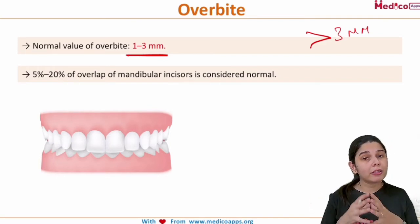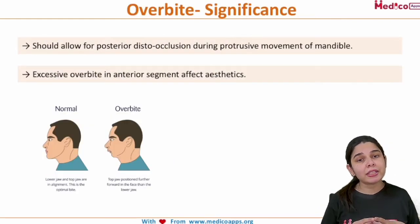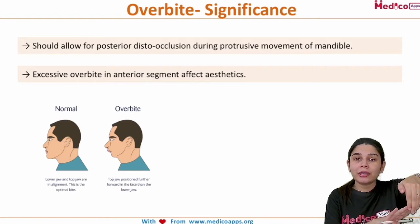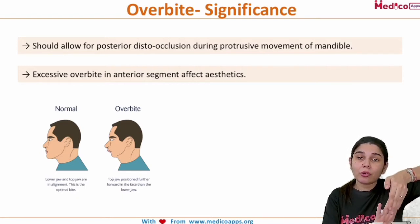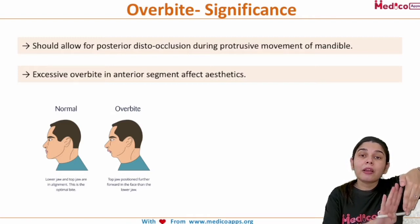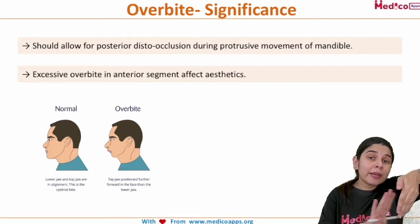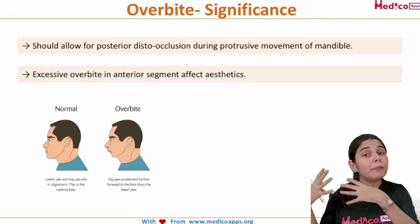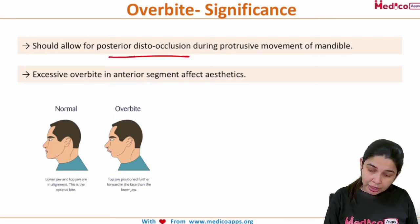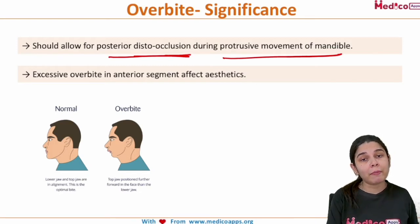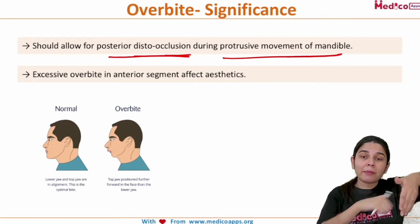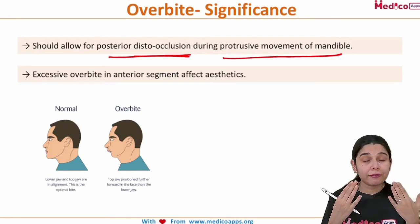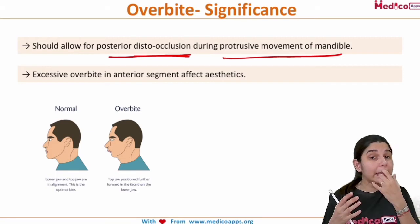There are two major significances of overbite. First, whenever we are trying to protrude the mandible, if there is an overbite present, the maxillary teeth are going to block or interfere with the protrusive movement of the mandible. The overbite should not be so excessive that it hinders the posterior distal occlusion movement during the protrusive movement of the mandible.